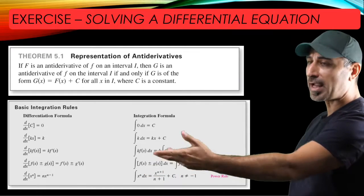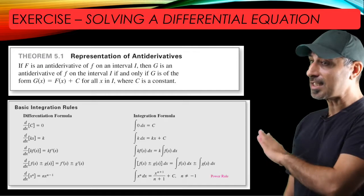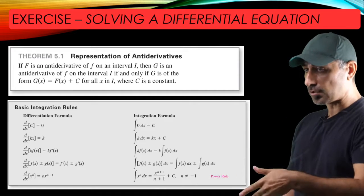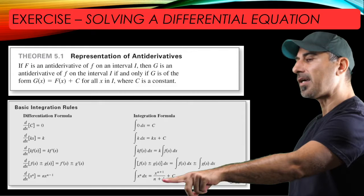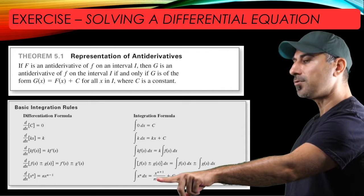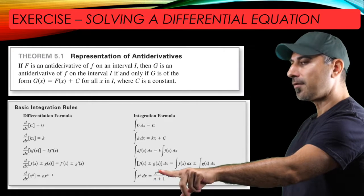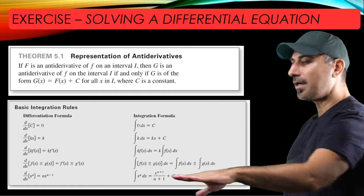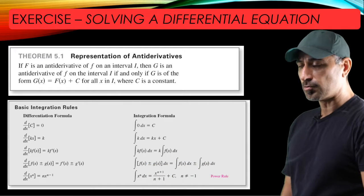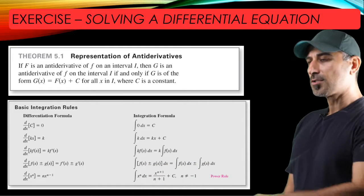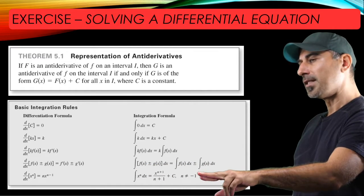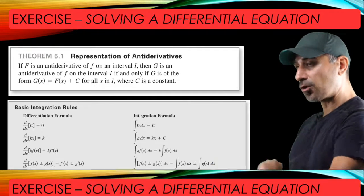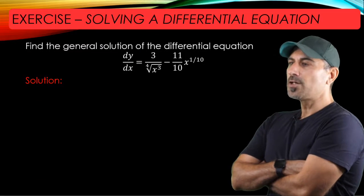Here n cannot be negative 1, because if n is negative 1 you're talking about the integral of 1/x, or x^(-1), which is a different integral we'll learn later. If n equals negative 1, you'd be dividing by zero, making this undefined. So this power rule for integration does not apply for n equals negative 1.